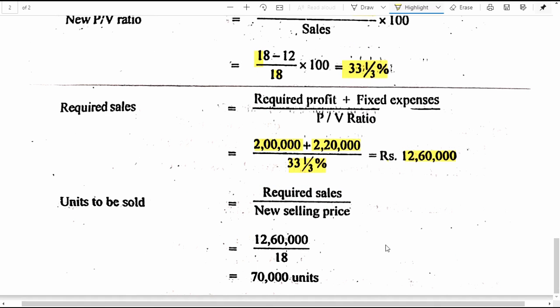Therefore, if the business makes a turnover of 12 lakh 60,000 rupees, it can earn the desired profit of 2 lakh rupees. Now, how many units must be sold at the new selling price of 18 rupees per unit? Required sales divided by new selling price: 12 lakh 60,000 divided by 18 rupees gives us 70,000 units.